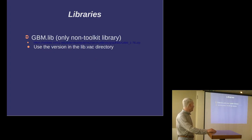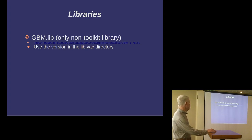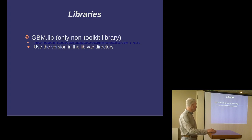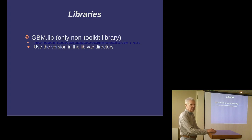The only outside library for this set includes the JPEG plugin, which was built using GBM.lib. There are three different versions of the lib; the one that's in the sub-directory on the package under lib.vac is where it's at. Again, that blue line is the URL where you can get the package.